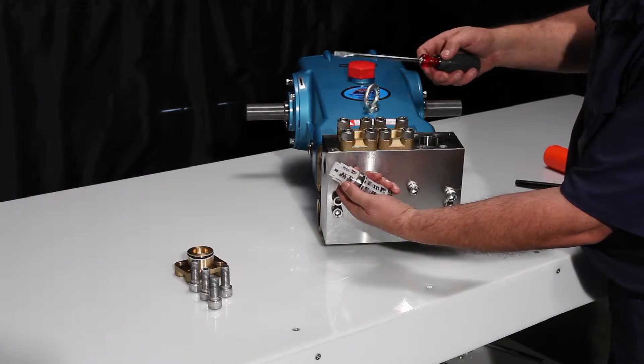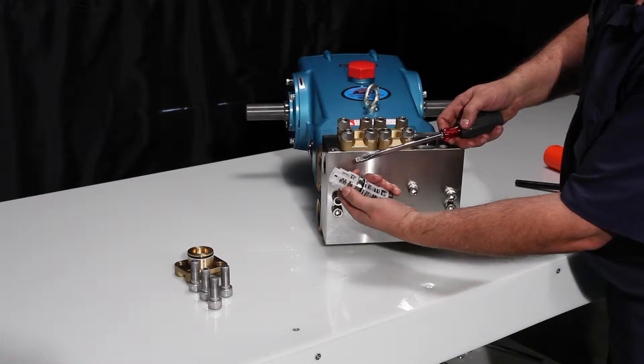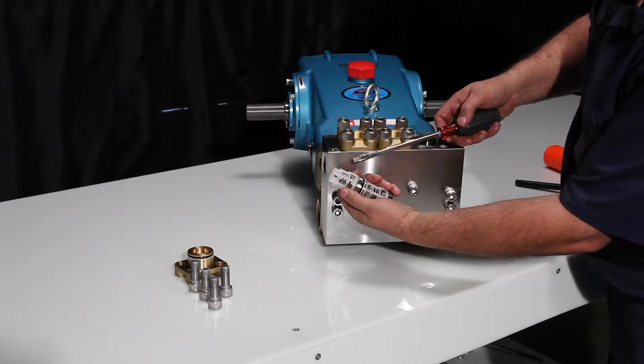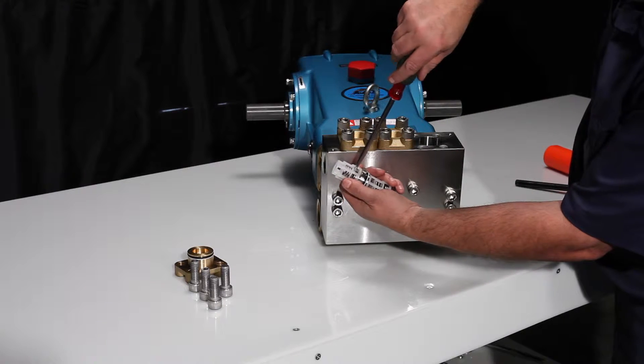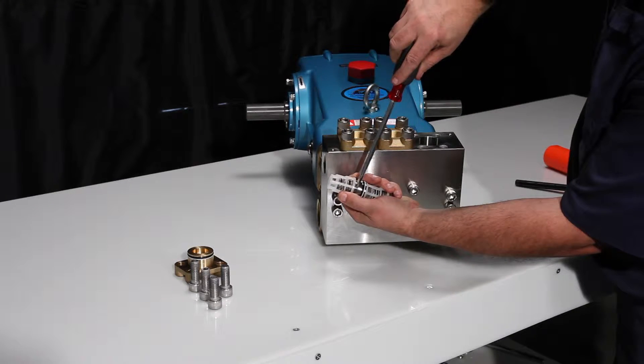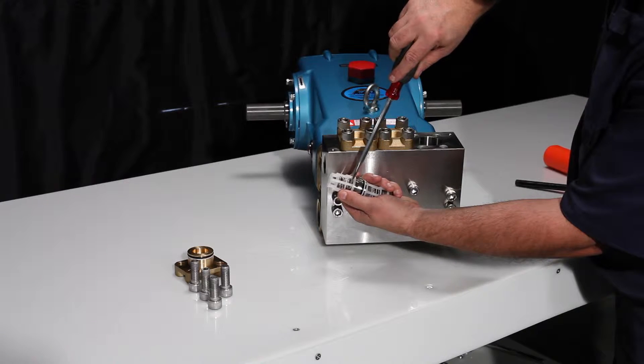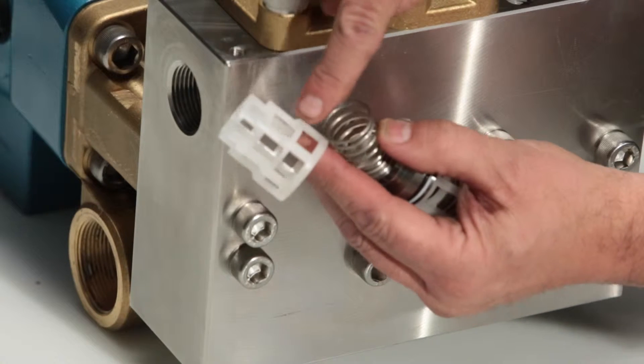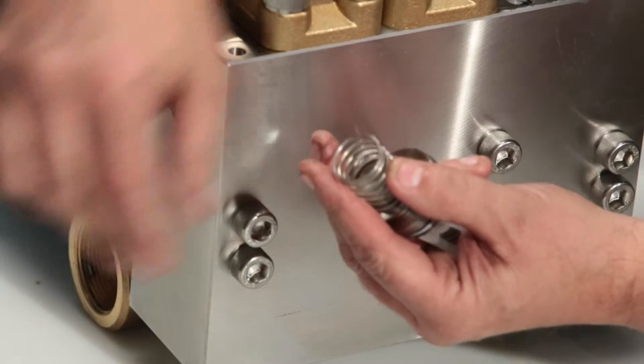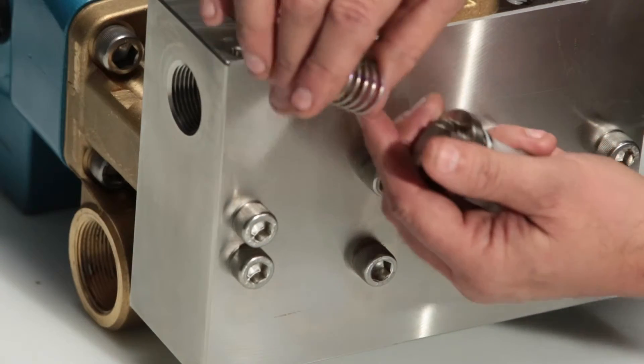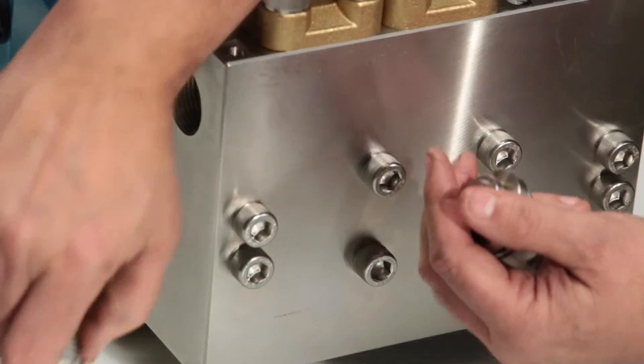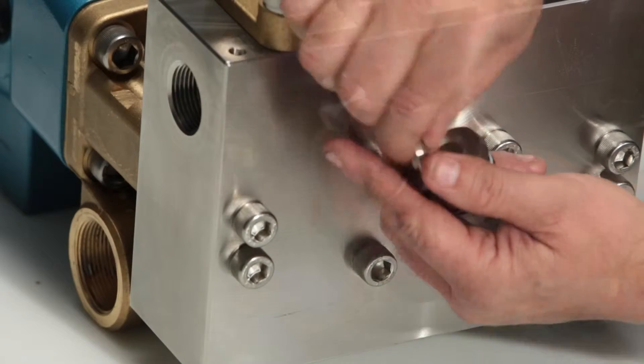To inspect the valves, start by placing a flathead screwdriver between the valve retainer and top of the valve and twist. This will create separation between the retainer and seat, which can then be removed. Inspect the valve retainer for any cracks, the spring for proper tension, and the valve for any pitting.